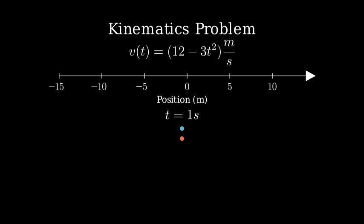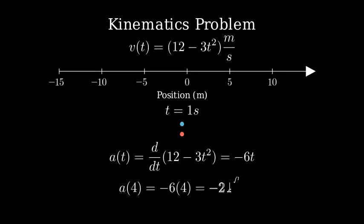First, let's find the acceleration when t equals 4 seconds. The acceleration is the derivative of velocity with respect to time. Taking the derivative of 12 minus 3t squared, we get negative 6t. When we plug in t equals 4 seconds, the acceleration is negative 24 meters per second squared.